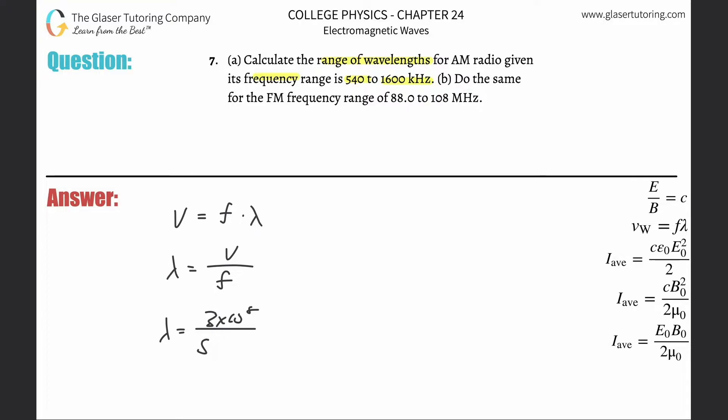Divide that by the first frequency that they gave you, which was 540 times 10 to the third hertz, because you need that in hertz not kilohertz. And then you got to do a second calculation here, divided by 1600 times 10 to the third because we need that in hertz again.